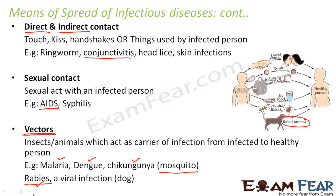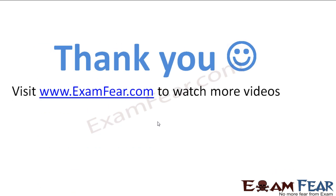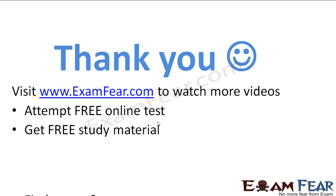These are the means by which infectious disease can spread from an infected person to a healthy person. Keeping in mind what disease a person is suffering from, we should take proper precautions. If a person has an infectious disease spread by direct or indirect contact, we should avoid that kind of contact; if it is not transmitted by direct contact, there is no need to isolate that person. Please visit examfear.com to watch more videos, attempt free online tests, get free study material, and find tutors and mentors. Thank you.